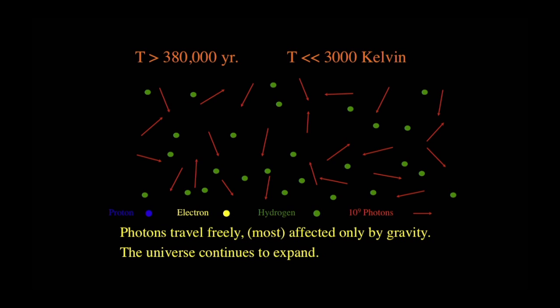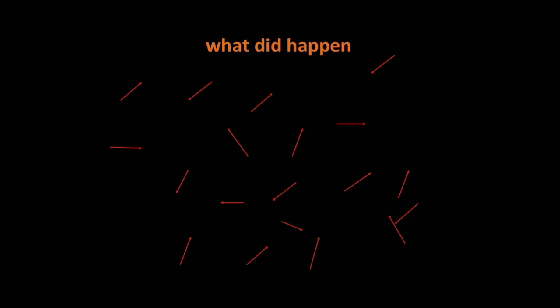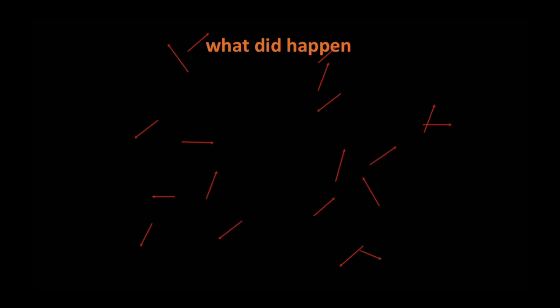Ever since then the photons have been traveling freely, mostly affected only by gravity, while the universe has continued to expand. Our usual picture of the Big Bang — a hot spot isolated in space with things spreading out from there — is not what actually happened. What really happened is that there were lots of photons filling space, lots of other things filling space, moving through space slowly and continuously.